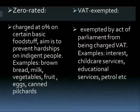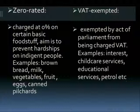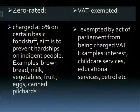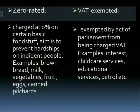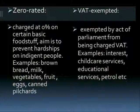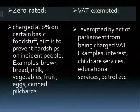Then we have kinds of taxes: zero-rated and VAT-exempt. What is zero-rated? Some goods are charged at zero percent. For example, those goods can be foodstuffs — aimed to prevent hardships on indigent people. Examples: brown bread, milk, vegetables, fruit, eggs, or canned pilchards. Once you start buying white bread, it's not a zero-rated item because it is luxurious. You can live without white bread; it's not a basic thing.